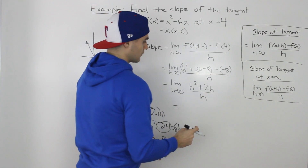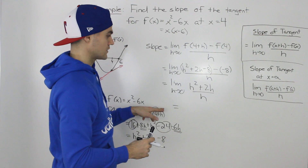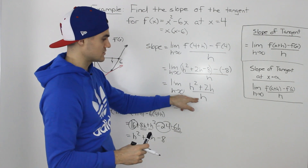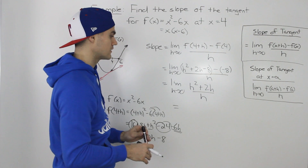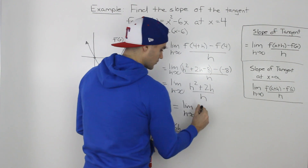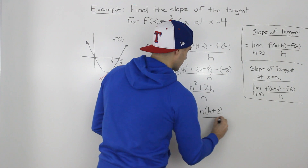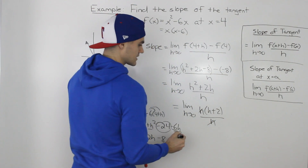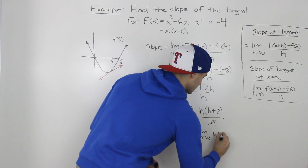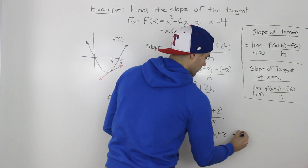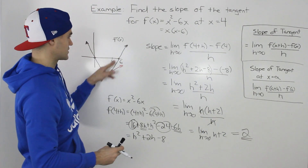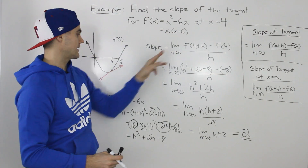We can't plug in h = 0 yet because that would give us division by zero, which is undefined — same idea as with the difference quotient in advanced functions. So we factor out an h from the numerator: h(h + 2) / h. The h's cancel, leaving the limit as h → 0 of (h + 2). Now we can plug in 0 for h and we get 2.